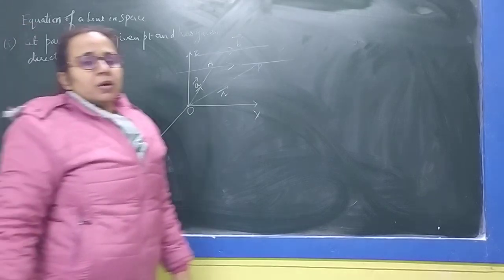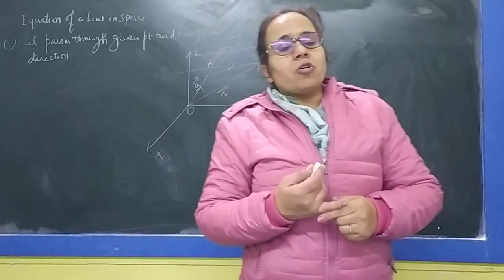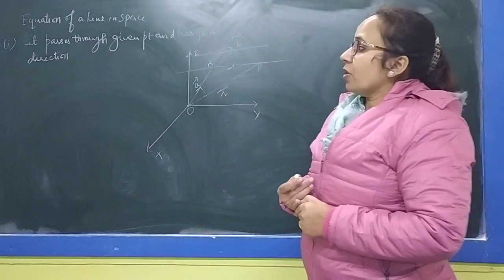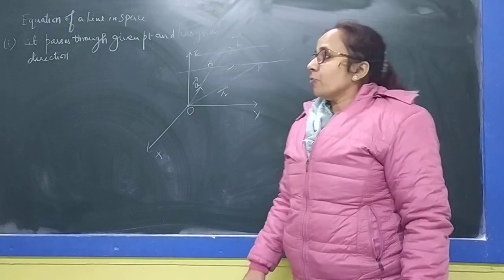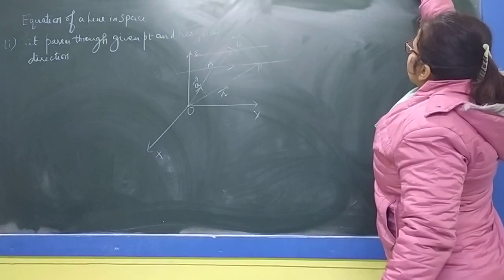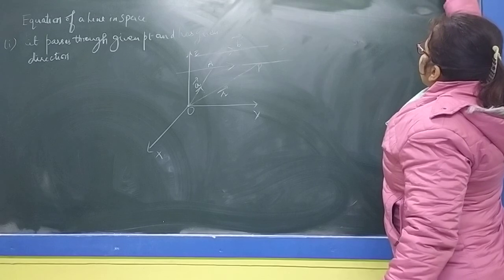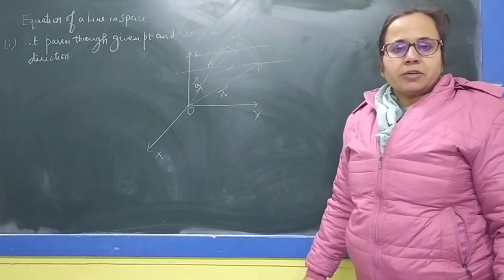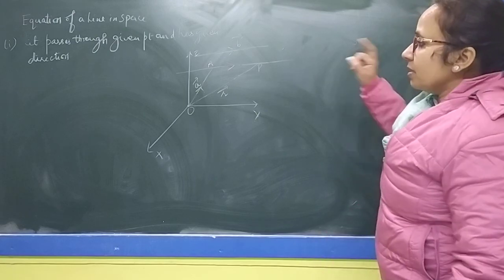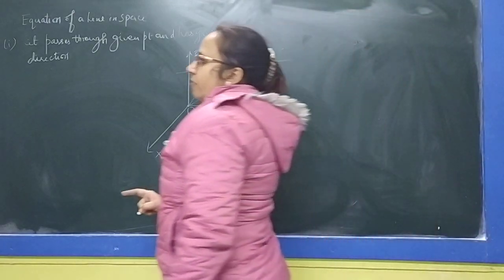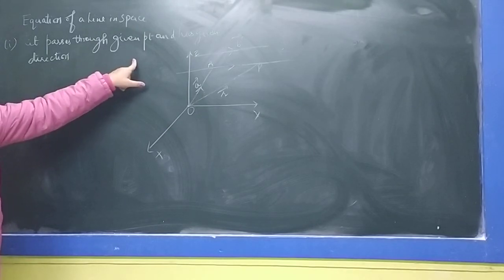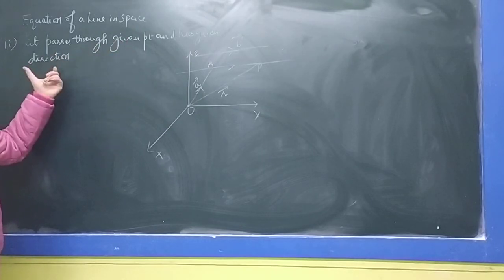Just want to tell you one thing — you have already done coordinate geometry. In 2D, you wrote the equation as Y minus Y1 equals M times X minus X1. Now in 3D, we consider a line which passes through some point and has a given direction.